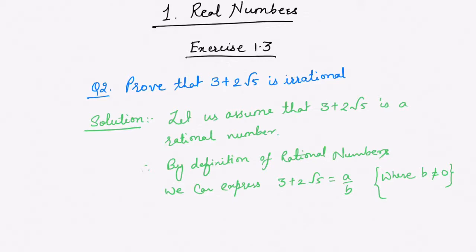Let us assume that 3 plus 2 root 5 is a rational number. Therefore, by definition of rational numbers, we can express 3 plus 2 root 5 in the form a upon b, where b is not equal to 0 and a and b are co-prime numbers, since it is the reduced form. So 3 plus 2 root 5 equals a upon b.